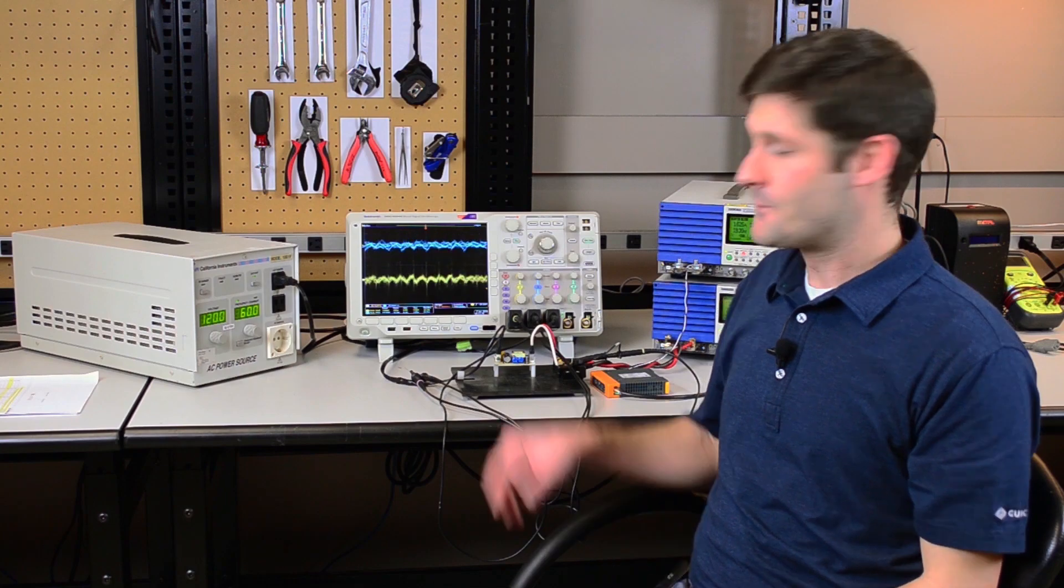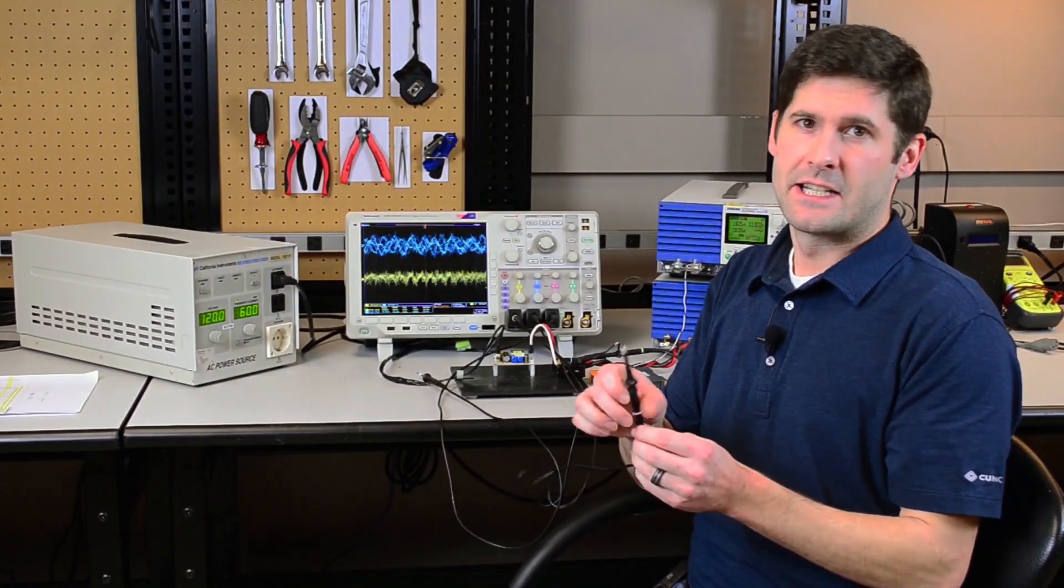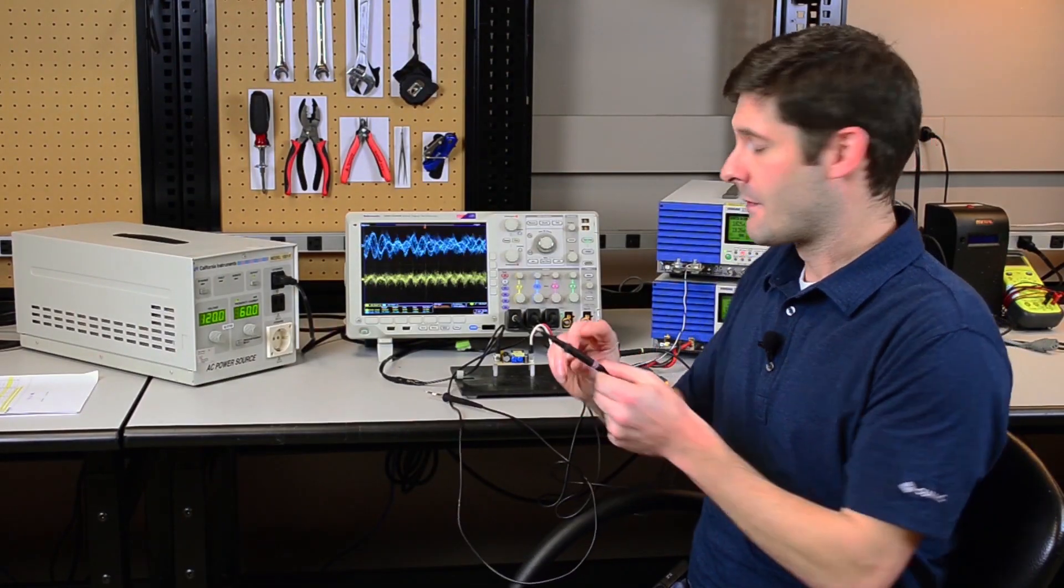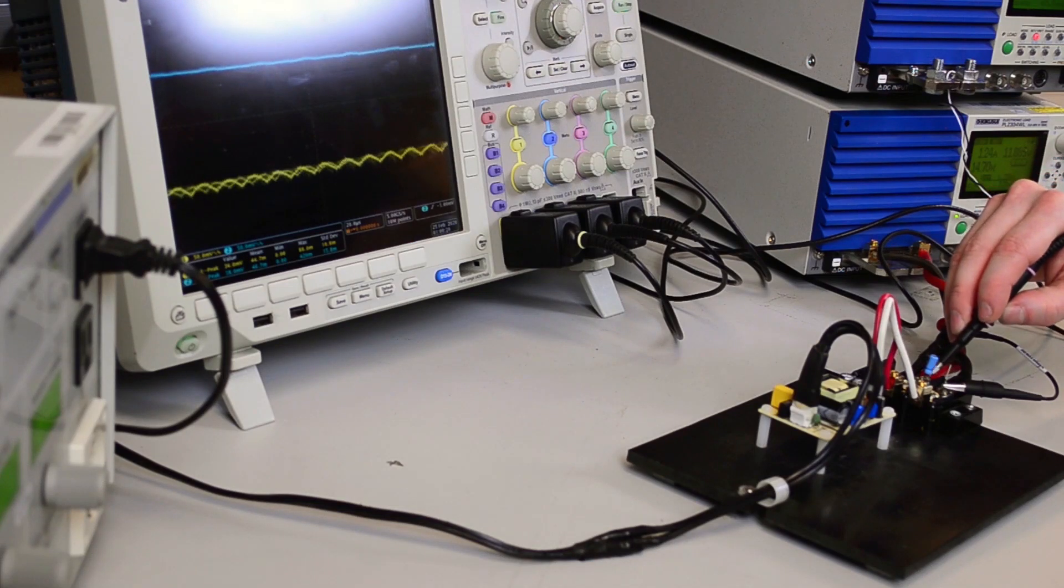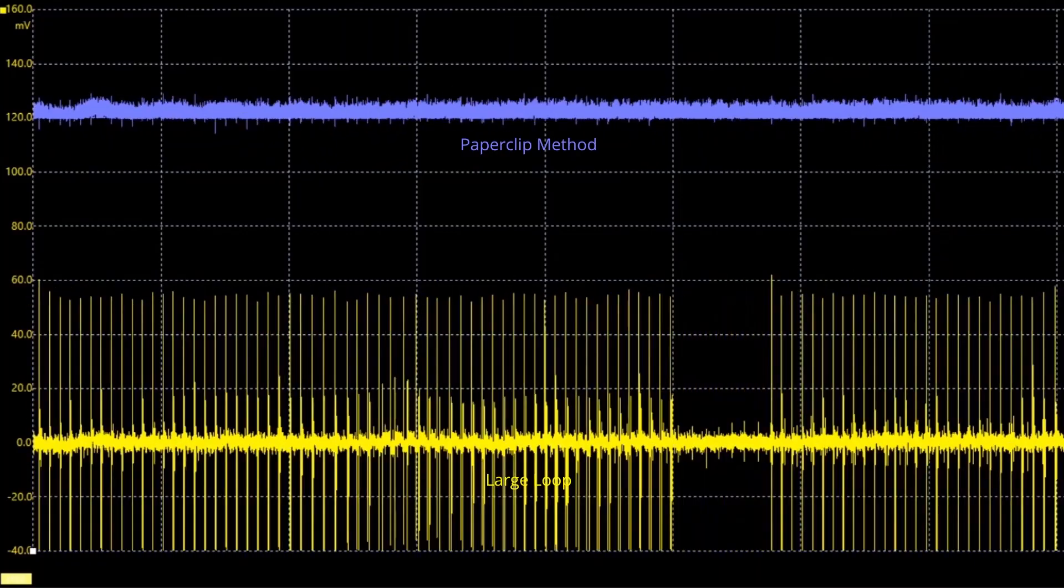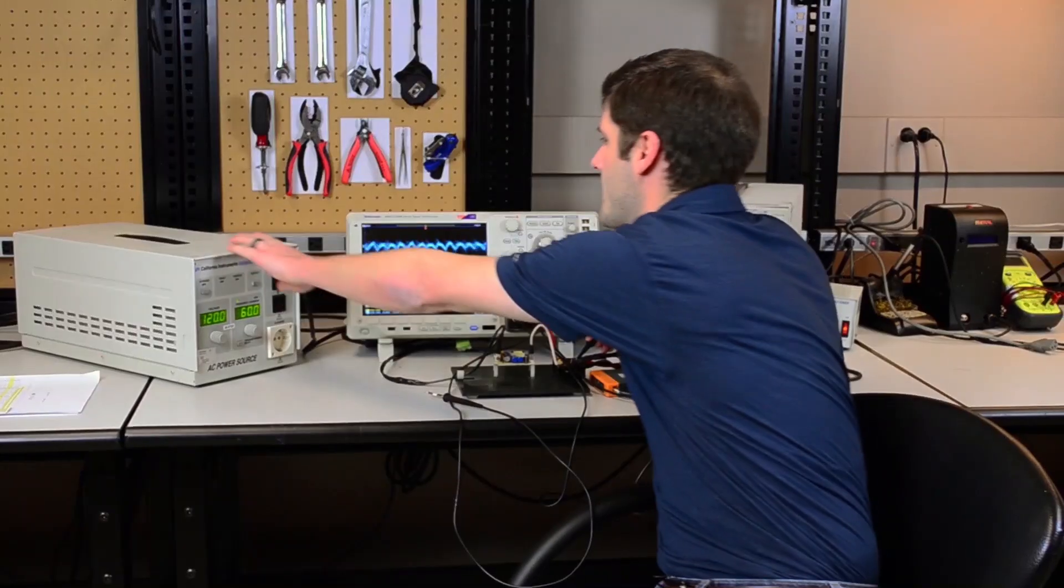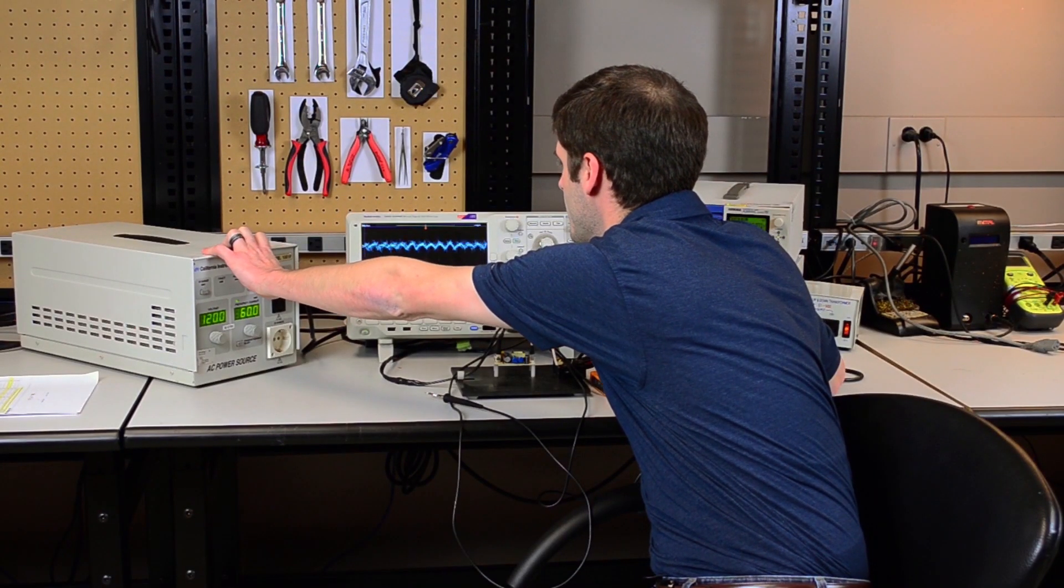Now we'll add our paperclip probe. You can see that the loop area is significantly reduced with this method, and we're not seeing any significant external noise being picked up, even with our power supply nearby. Now we'll turn the power supply on so you can see the difference between the two methods.